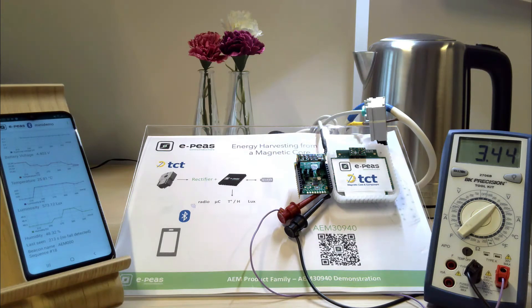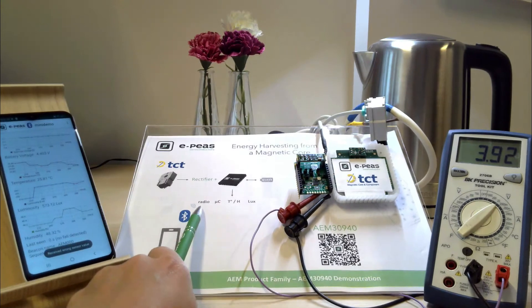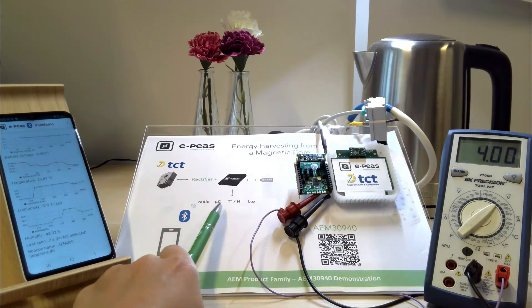As soon as we achieve the V charge ready level, which is defined by configuration as 3.67 volts, it will activate the internal LDO of the AM, providing a 3.3 volt regulated voltage to the electronics. The electronics consist of a BLE radio sending beacon messages and sensors.